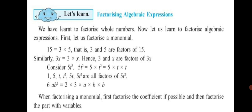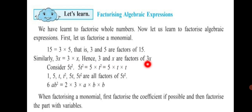Here, 15 can be written as 3 × 5, so 3 and 5 are factors of 15 — multiplication is the only operation. Similarly, 3x equals 3 × x, so 3 and x are factors of 3x, and multiplication is the only operation. These are therefore called monomials.